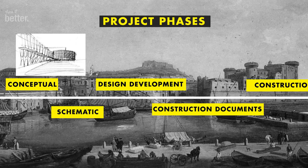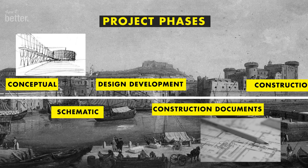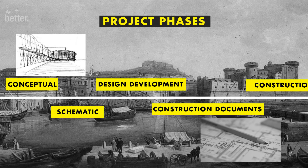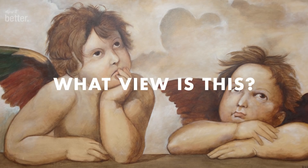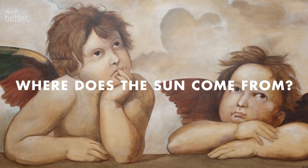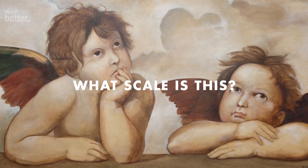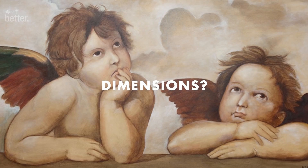When you think you're done with a drawing, take the point of view of another person and ask basic questions: What view is this — top view, section, facade? Do I need to indicate what view it is? Where's the sun coming from — should I insert north? What is the scale? Should I insert a human scale figure? Are all these dimensions really necessary?